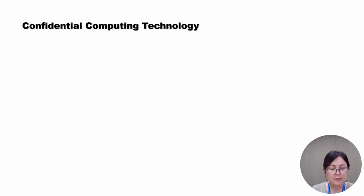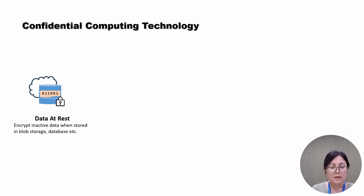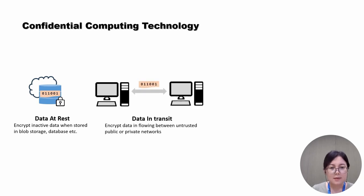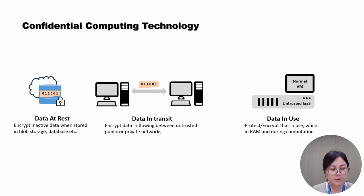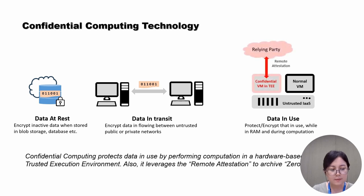Typically, data exists in three states: data at rest, data in transit, and data in use. Traditionally, data is often encrypted at rest in storage and in transit across the network. However, the data is vulnerable while it's being processed in memory. Confidential computing addresses this vulnerability by enabling computation on encrypted data, ensuring that sensitive information remains secure even while in use.